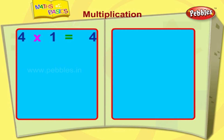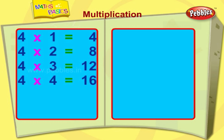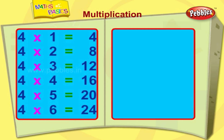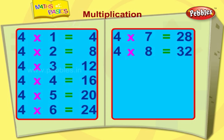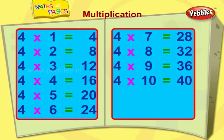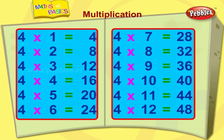Four ones are four. Four twos are eight. Four threes are twelve. Four fours are sixteen. Four fives are twenty. Four sixes are twenty-four. Four sevens are twenty-eight. Four eights are thirty-two. Four nines are thirty-six. Four tens are forty. Four elevens are forty-four. Four twelves are forty-eight.